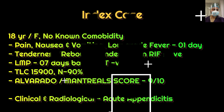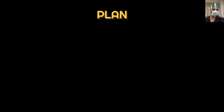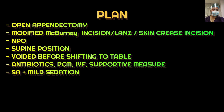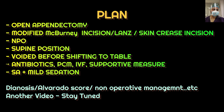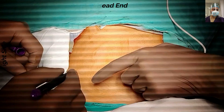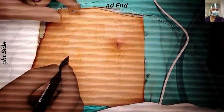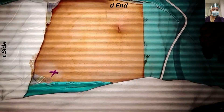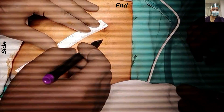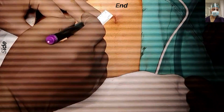This patient was planned for open appendicectomy — I will not get into the debate of open versus laparoscopic, which we can discuss in another video. We used a modified McBurney — Lanz or skin crease incision — because it gives the best cosmetic result. The patient was kept in the supine position under spinal anaesthesia. We administered antibiotics, IV fluids, and supportive measures beforehand. Under spinal anaesthesia and sedation in the supine position, we started this procedure of open appendicectomy.